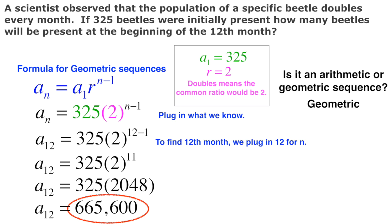You can write a label on this — this would be number of beetles — but when you type it into the online system, just leave it as the number. 665,600 would be fine; you don't need the comma. Just leave it like that and you'll be okay.